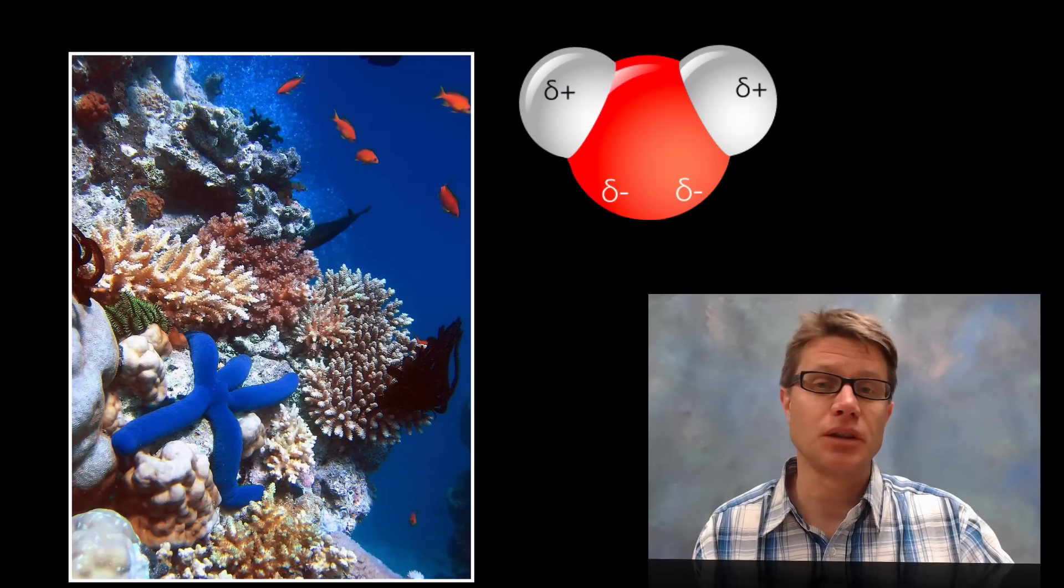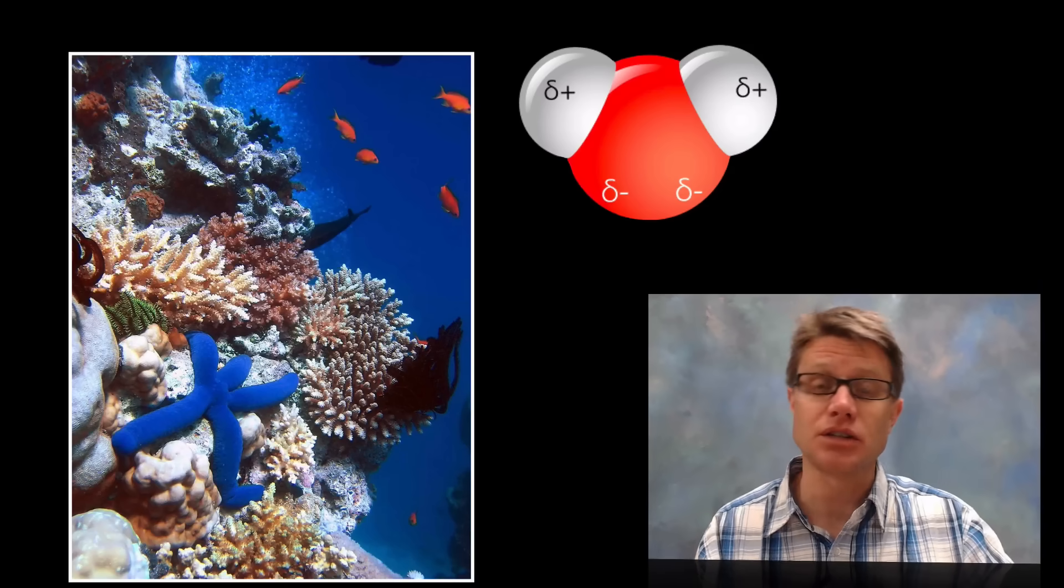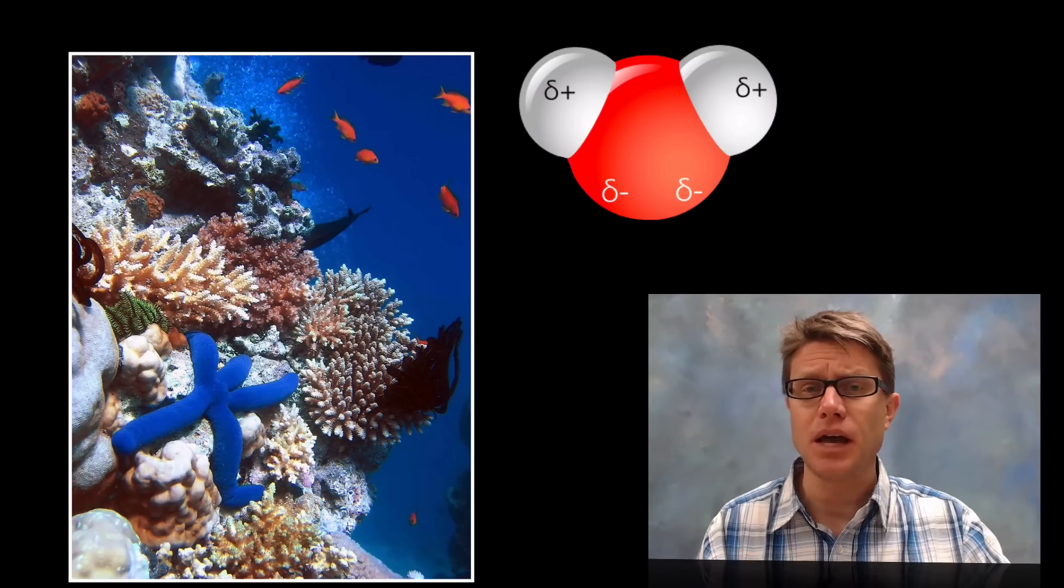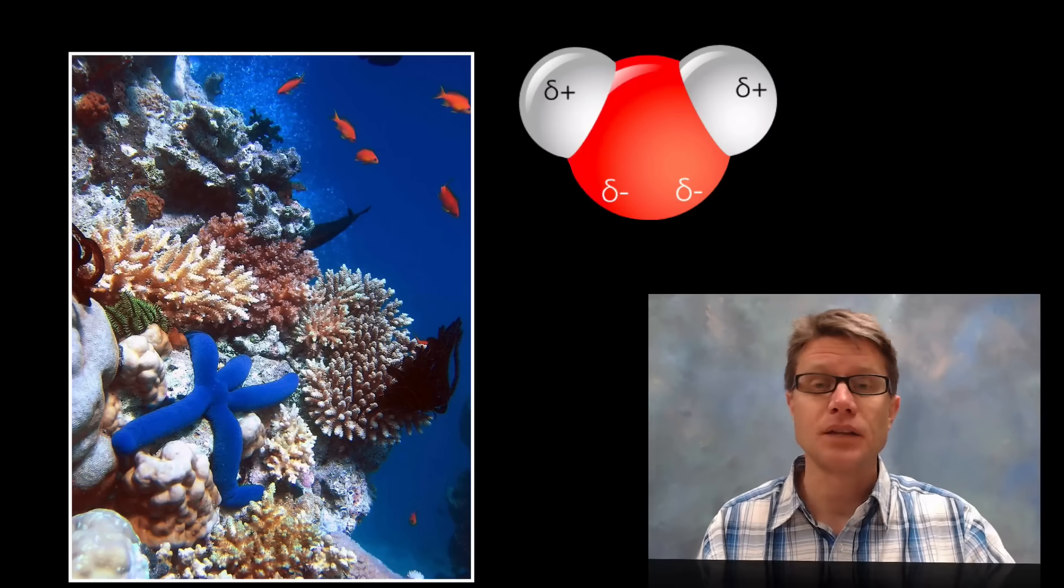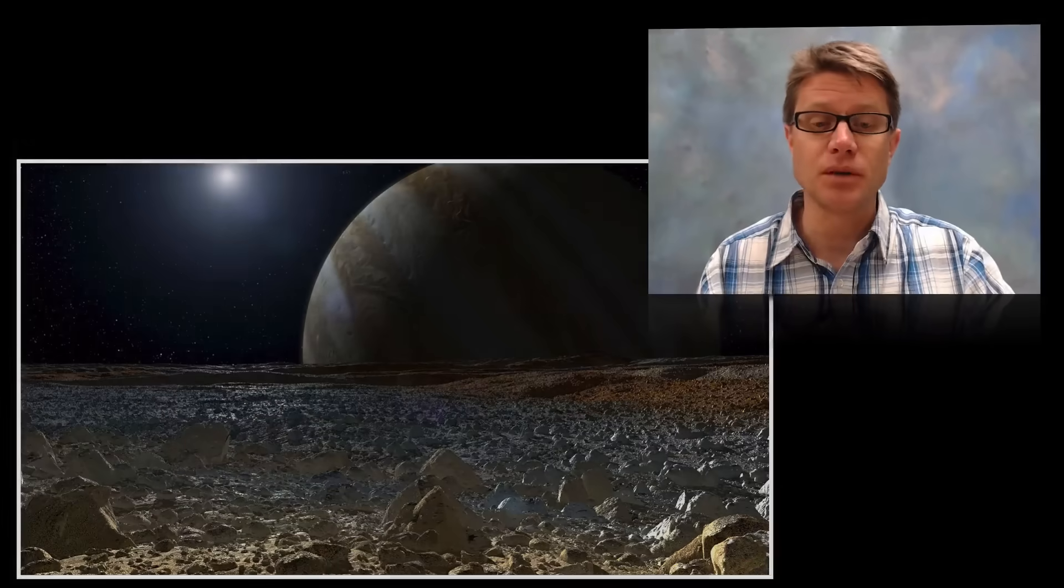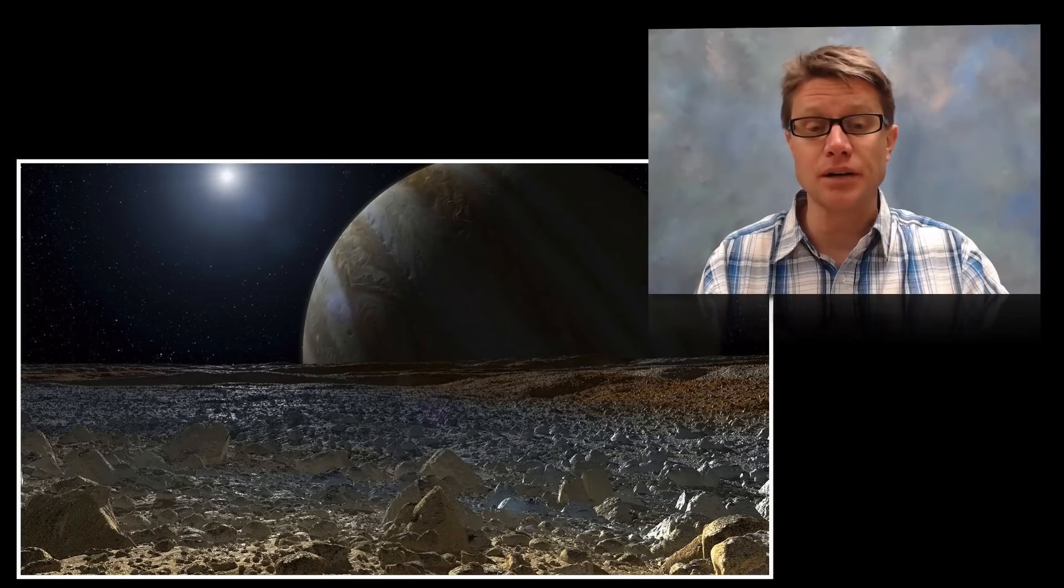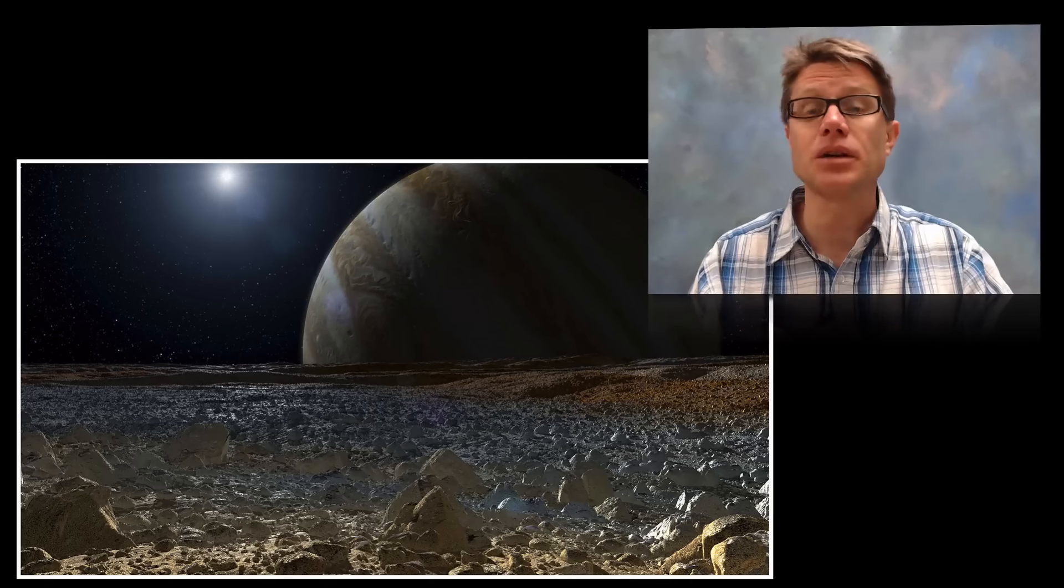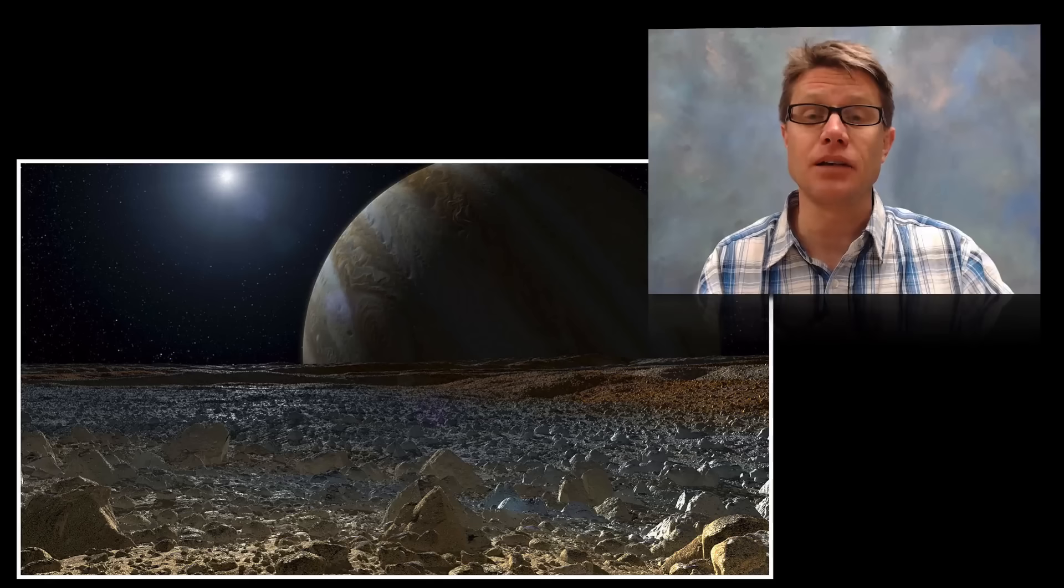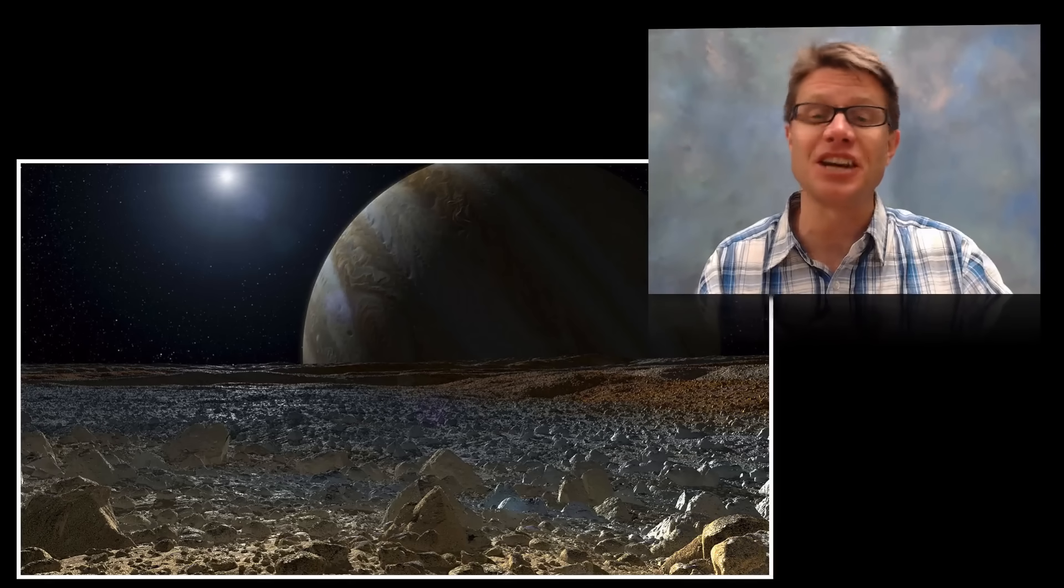Water is an amazing molecule. It allows life to exist on our planet. If it wasn't polar in nature, life probably wouldn't exist. As we start to look for life out in the universe, what are we generally looking for? Water. Where is a great place to look? Europa is one of the moons of Jupiter. We think that there is a liquid water ocean underneath an ice surface. If we could eventually get there, we might find life there. And so that's water. It's polar, it's amazing. I hope that was helpful.